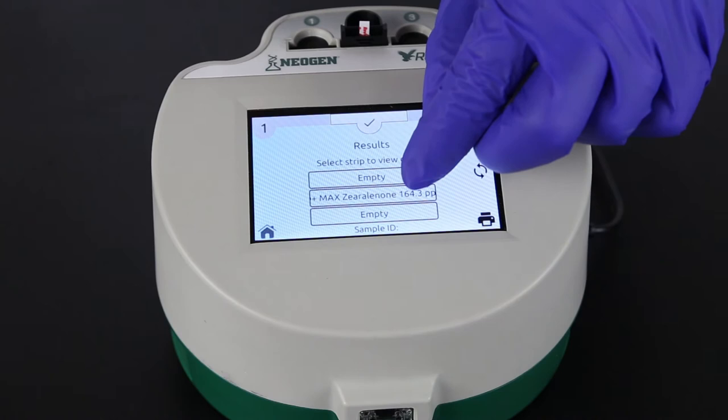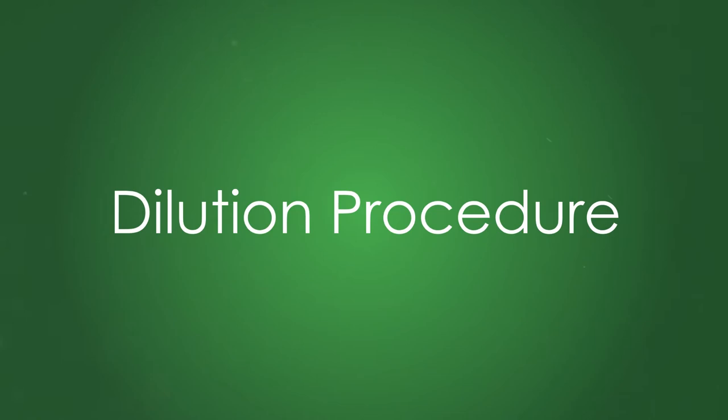For samples greater than 500 ppb, you will need to dilute and retest.